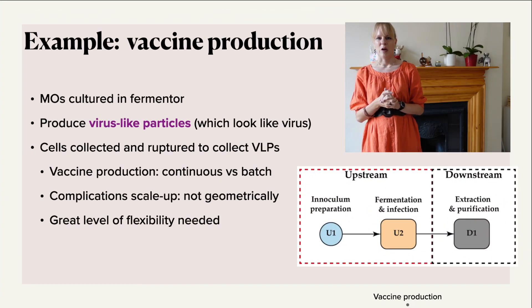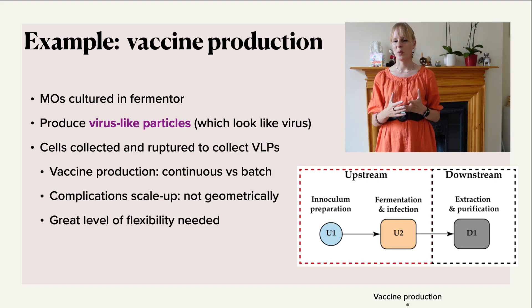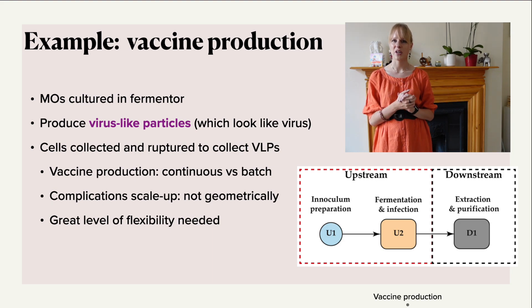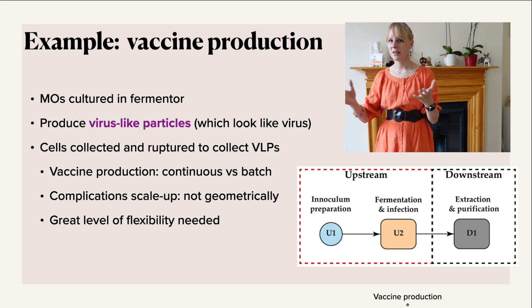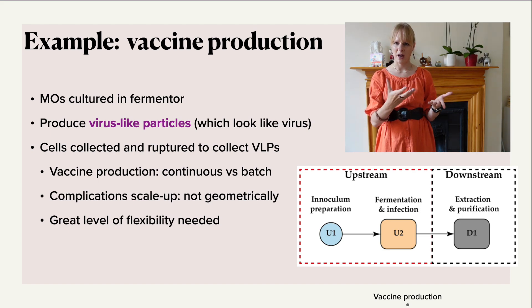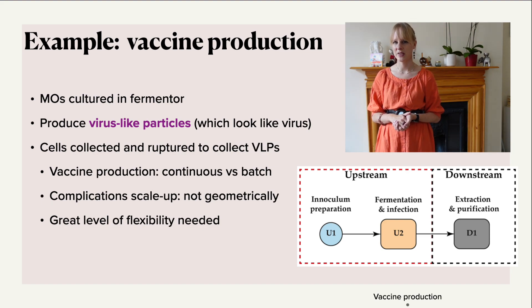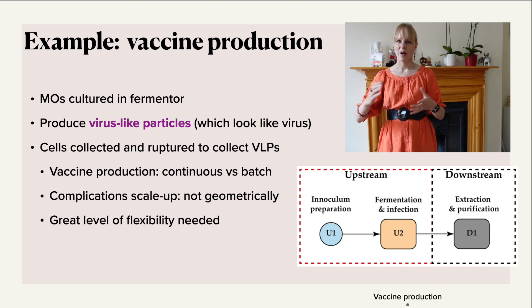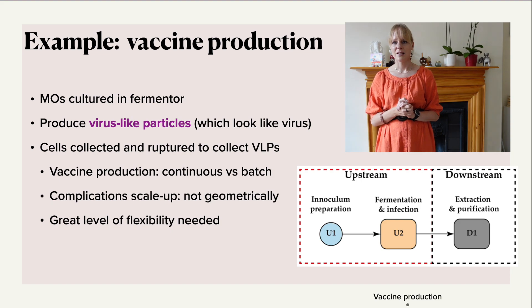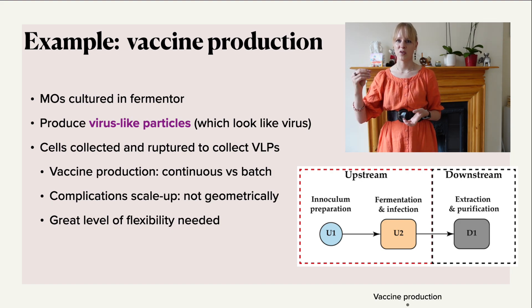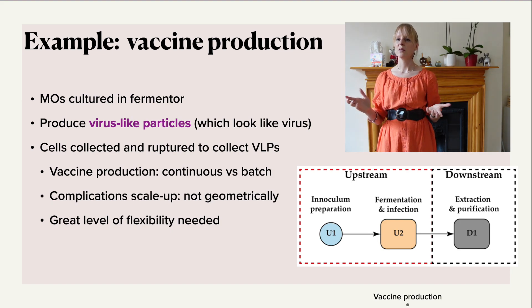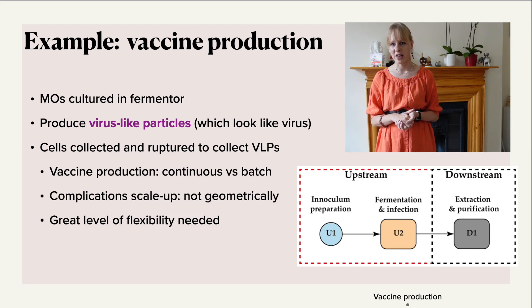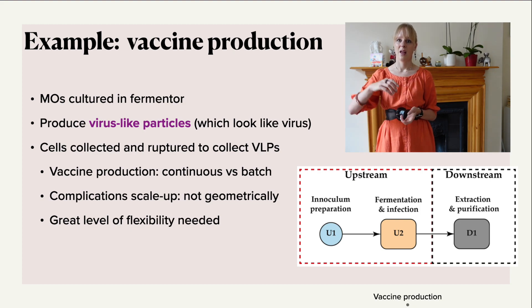Now let's look at vaccine production as a more topical example. Not all vaccines are prepared this way, but this shows how it can be done using a fermenter. The first steps are essentially the same: use a propagator to reach the right concentration, inoculate and prepare the culture, then infect it to start fermentation. Once infected, the culture begins producing virus-like particles, or VLPs — not the virus itself, but something that looks like it. When sufficient VLPs have been produced, the cells are collected and ruptured, or the VLPs are otherwise extracted. These particles vary significantly in size, and membrane- or size-based separation can help determine the best extraction approach.